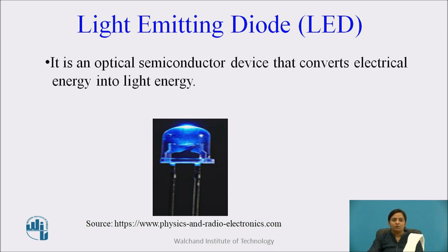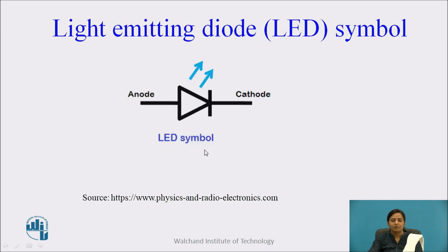The light emitting diode, that is the LED, is an optical semiconductor device that converts electrical energy into light energy. Whenever the voltage is applied across this device, it emits light. The symbolic representation of LED has two terminals, anode and cathode, and is similar to the PN junction diode. The only change is the arrow pointing outside from the diode, which indicates that light is being emitted from this device.